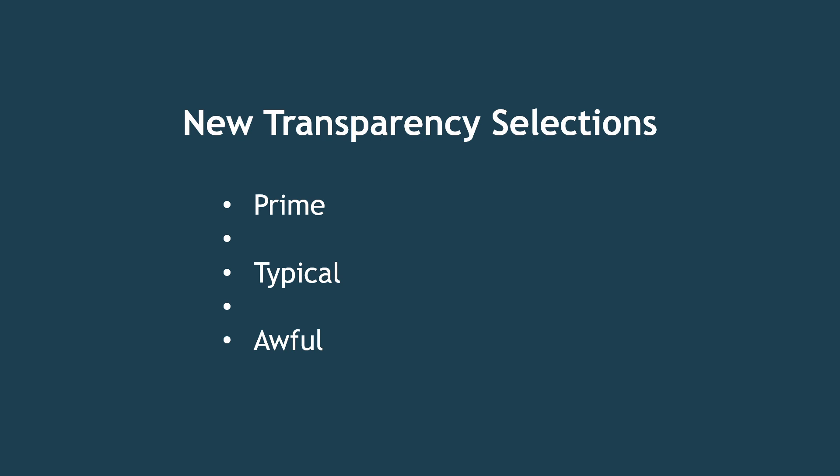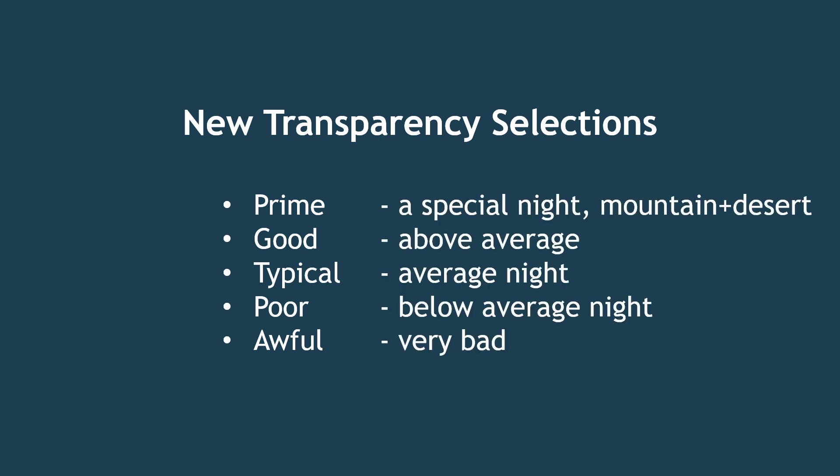So what about what's between typical and prime? He decided to call that good. If you are someplace near sea level, especially with a lot of atmospheric moisture overhead, good is probably the best transparency you're ever going to get at that location. Between awful and typical, he chose poor. Greg says that would be the worst night that he would want to actually be observing on, unless he had a really compelling reason — like an event in the sky or a comet that's not going to be there the next night. So our final scale goes from prime, the very best, to good, to typical, to poor, and finally awful.